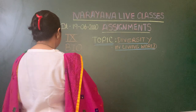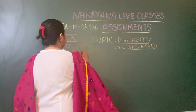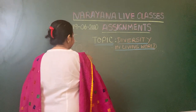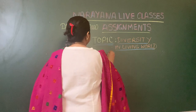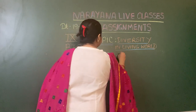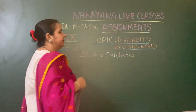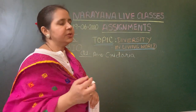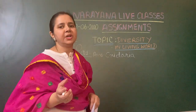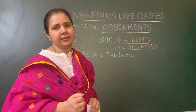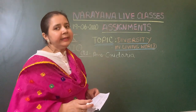Question number one asks: Cnidarians are also known as dash. Cnidarians are also known as Cnidaria — the C is silent. We term them as Cnidaria because of the presence of very special cells in them, which are nematoblasts. That is why cnidarians are also termed as Cnidaria.